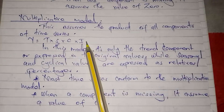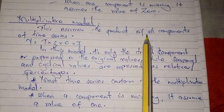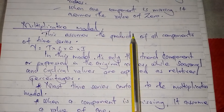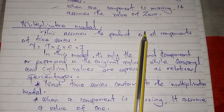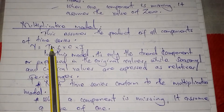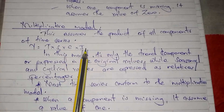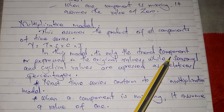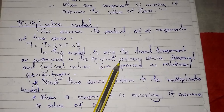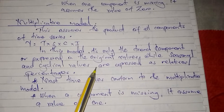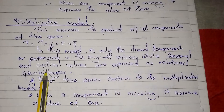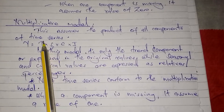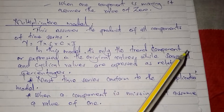The multiplicative model assumes the product of all the components of time series — it assumes the multiplication of all four components. Therefore Y is equal to T times S times C times I. In this model it is only the trend component which is expressed in the original values, whereas the seasonal and cyclical values are expressed in relative percentages.